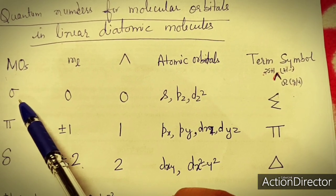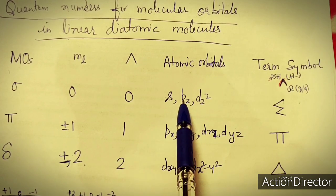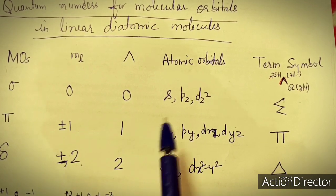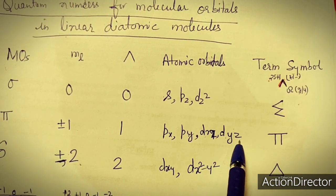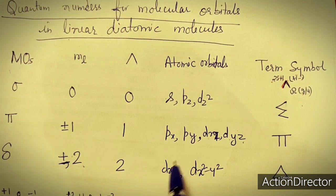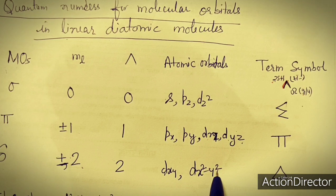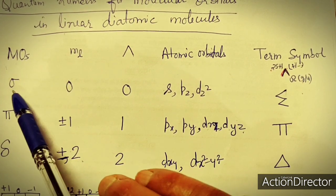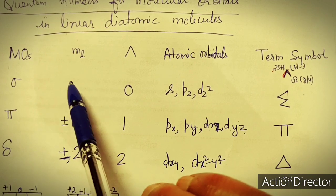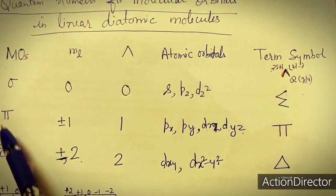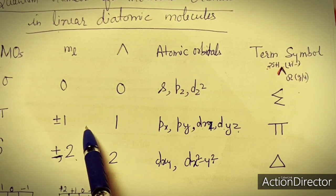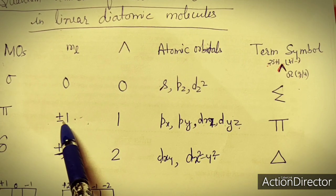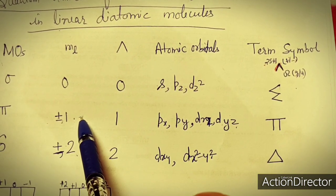Sigma molecular orbitals are singly degenerate (ml = 0), accommodating two electrons. Pi orbitals always come in two (ml = +1 and −1), accommodating four electrons total. Delta orbitals also come in two (ml = +2 and −2). Therefore, lambda = 0 for sigma, 1 for pi, and 2 for delta molecular orbitals.